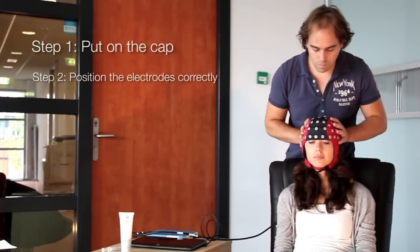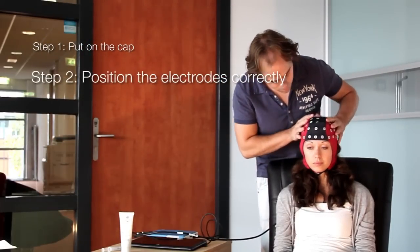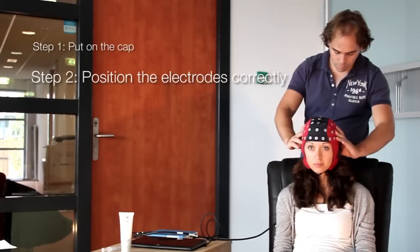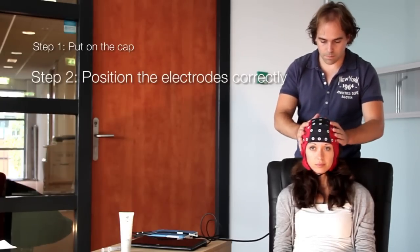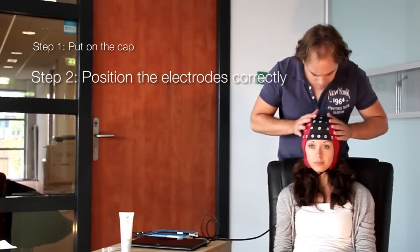Try to position the cap so that the electrodes fall over the proper positions. Check that the fabric is smooth and not wrinkled. Check that the cap is applied symmetrically with the midline electrodes over the nasion-inion line and that the cap is properly centered.